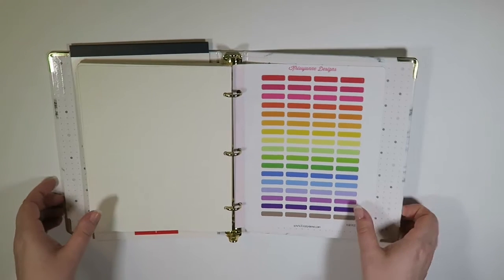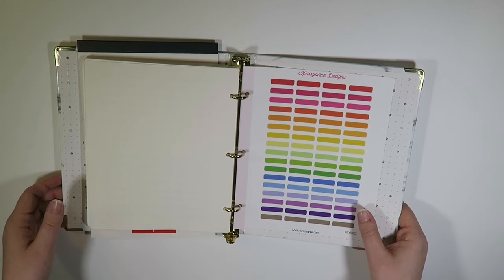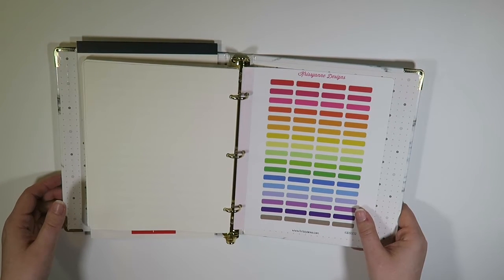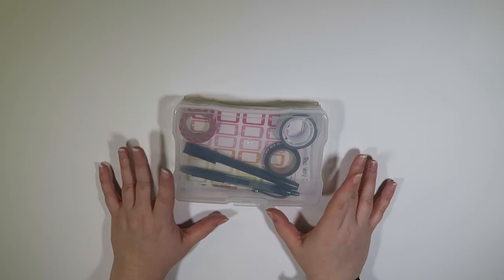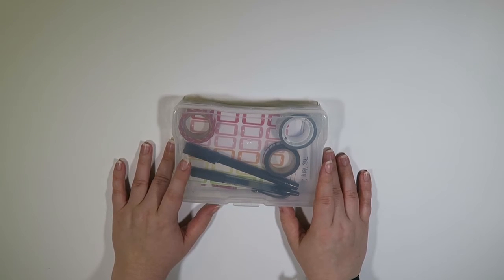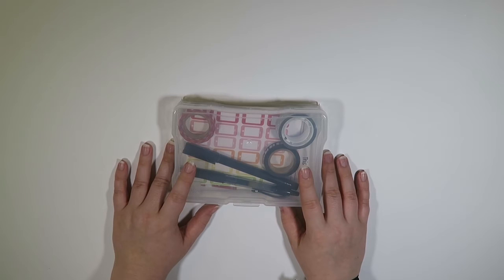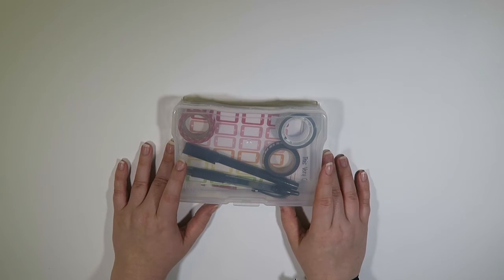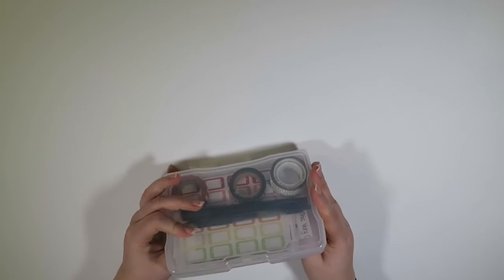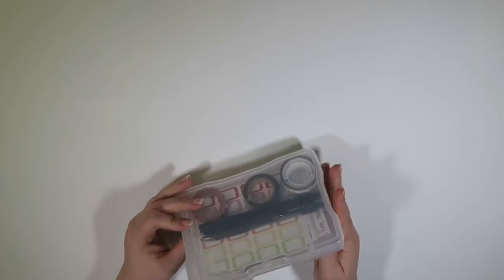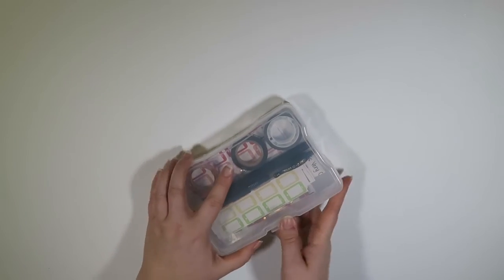So that is it for the binder. And let me show you what I have in my sticker box. Okay, so this is the little sticker box that I am bringing with me. This is how I organize my loose stickers that I don't have in a binder. And if you're interested, I will link the video below showing how I organize everything. But this is just one of the containers that I'm currently not using. So I figured I would use this for travel.